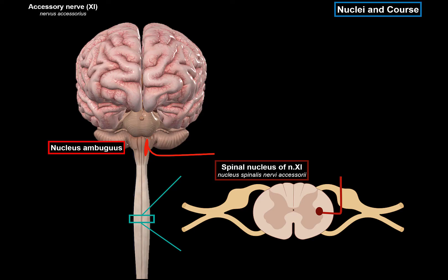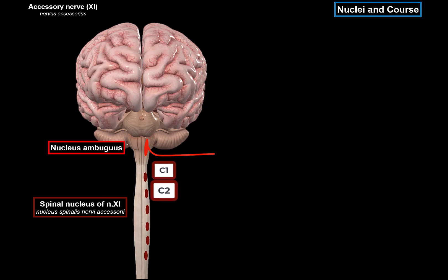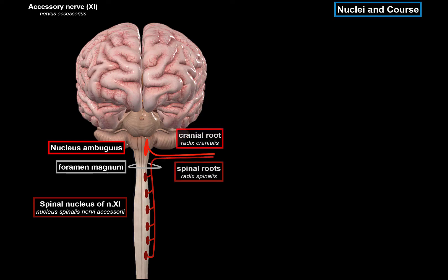The fibers ascend from the nucleus located in C1, C2, C3, C4, C5, and C6 — keep in mind there are variations. All of these branches ascend and go together through the foramen magnum, then join the cranial aspect of this nerve. So now we have a cranial root and a spinal root going together within the cranium. This is how the nuclei of the accessory nerve are distributed along the central nervous system.